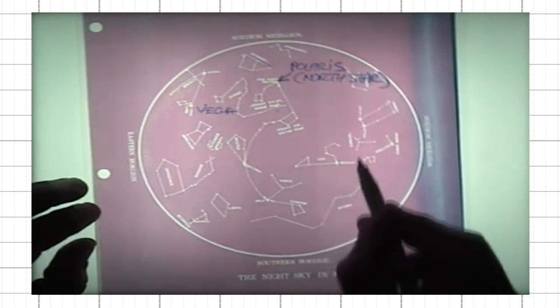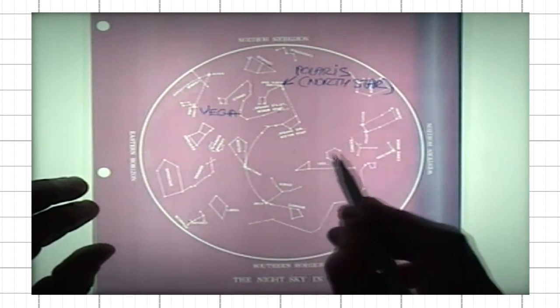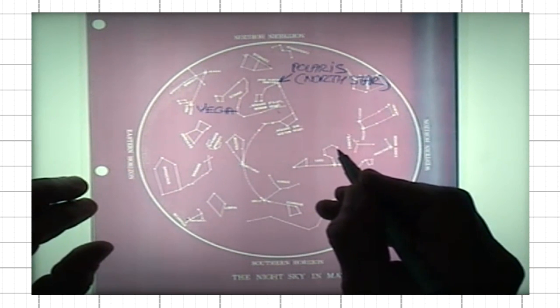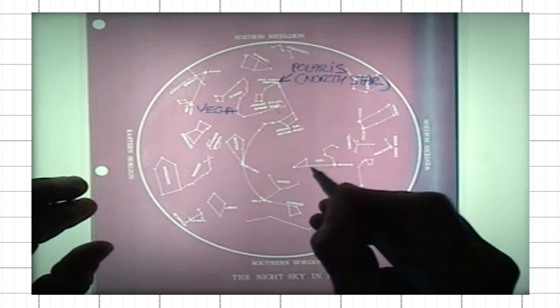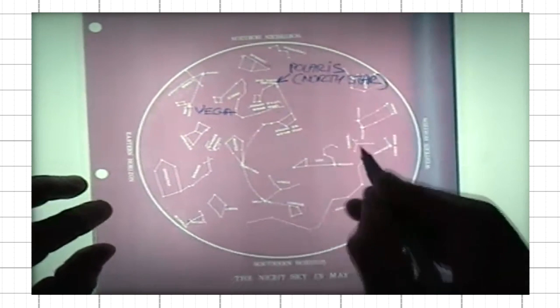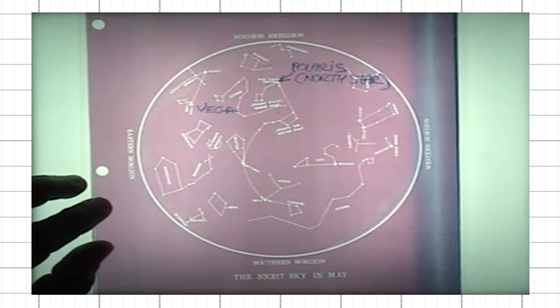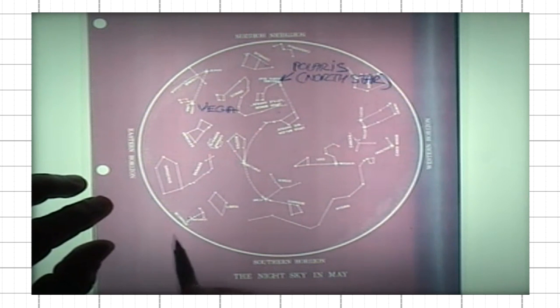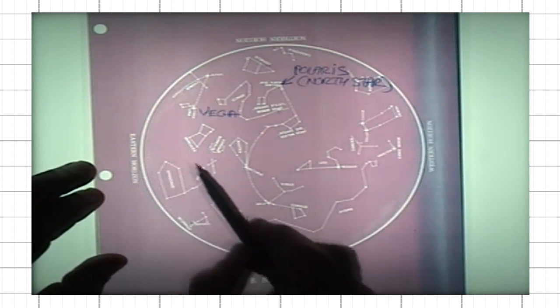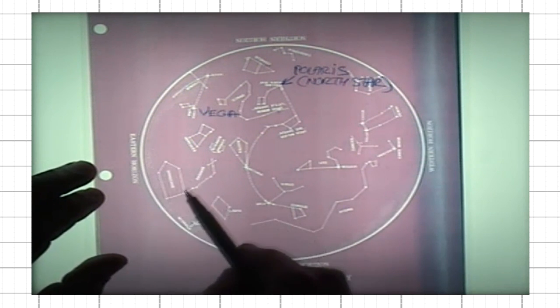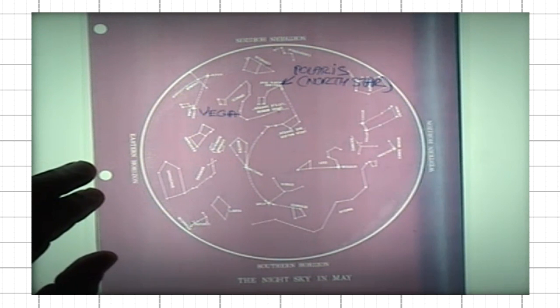For instance, there is Leo here. This grouping of stars resembles perhaps a lion. Here is the head of the lion. A lion is lying down, so here is the head. Here is Cancer. I mentioned before Scorpius. There is another one, Ophiuchus, that strictly speaking should be part of the zodiac circle.